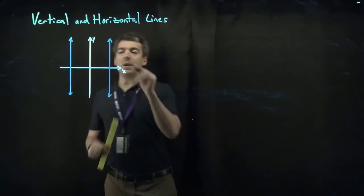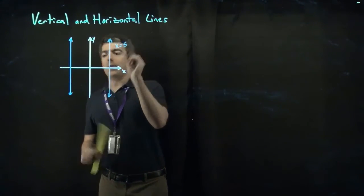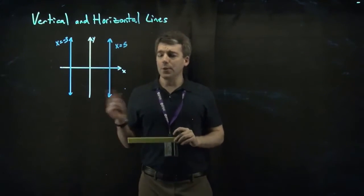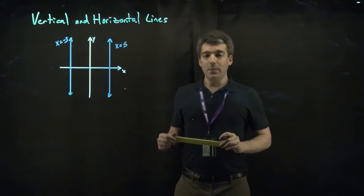So for example, this may be the equation x equals 5 and this might be the equation x equals negative 3. As long as they're both vertical lines, they're going to be parallel.